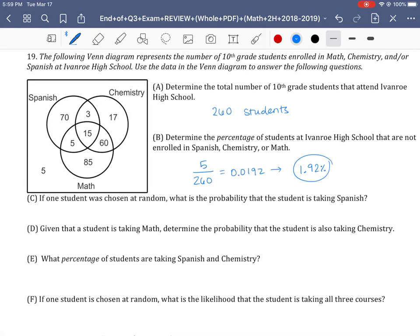If one student is chosen at random, what's the probability the student is taking Spanish? So the only thing we're looking for here is Spanish. Remember, all students within the Spanish circle are taking Spanish. You can't just only include these 70 because these guys are also taking Spanish. So we have to add up all of these values in here. We add that 73 and we add this 20, and that gives us 93 out of the 260 students that are taking Spanish. We could write this as a decimal.